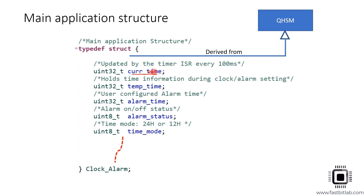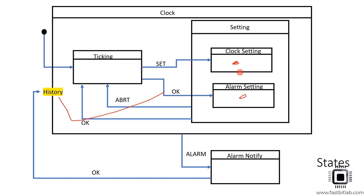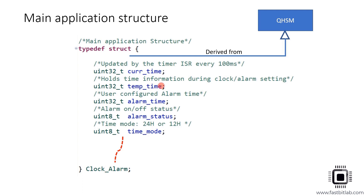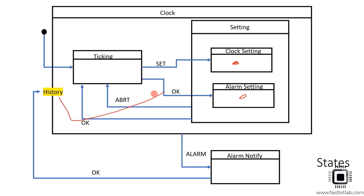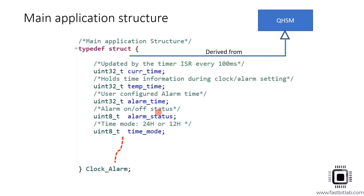There will be one more variable called temporary time, used to hold the setting time while doing settings. Temporary time is copied to current time only during approval — when the user says OK — otherwise it is not copied. Alarm time holds the user's alarm information. There's also an alarm status variable indicating whether the alarm is active or deactivated. Additionally, the user can select a time mode — 24-hour or 12-hour format — and that selection is stored in the time mode variable.